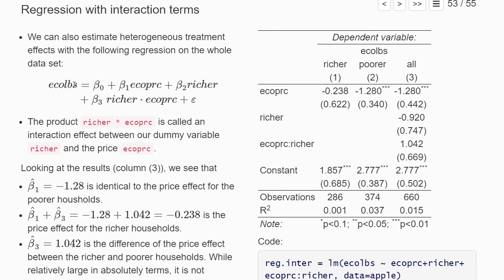So the demand for eco apples depends on the price. Then we have here a variable that's a dummy, whether a household is in the richer or poorer half of the population. And then here we have this interaction term. So we multiply this richer dummy with the price of the apples that were offered to the household. This term is called interaction term.